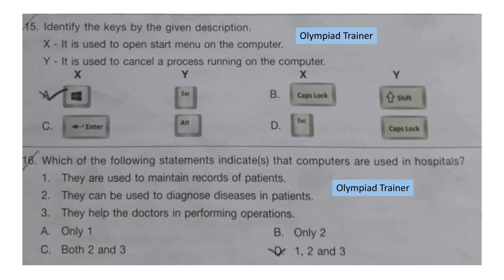Question 16: Which of the following statements indicate that computers are used in a hospital? 1: They are used to maintain the record of patients. 2: They can be used to diagnose diseases in patients. 3: They help the doctors in performing operations. The correct answer is option D — statements 1, 2, and 3 are correct.